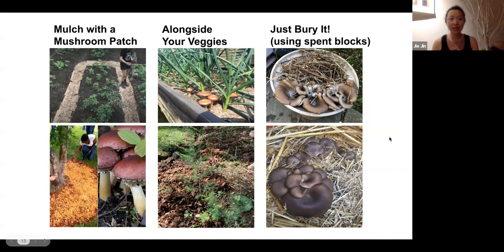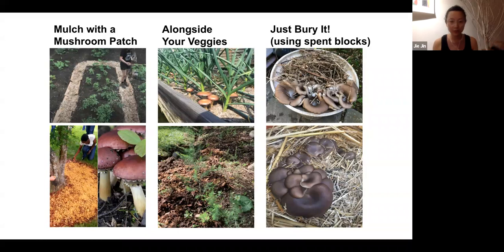If you don't have access to wood chips or space to soak them, but you happen to be near a mushroom farm, talk to them, get some spent blocks and just bury them. The work is minimal. Examples shown use regular planters with regular soil — dig a hole, remove the plastic wrap from the spent blocks, bury the block and cover it with mulch. Use straw or yard waste for mulch, keep it moist, and then you get mushrooms. Very low in cost and time, and a good way to learn.